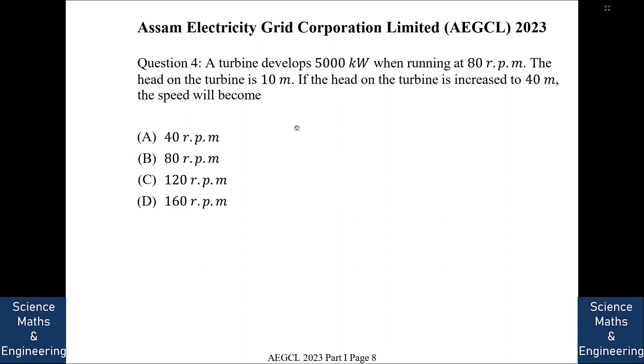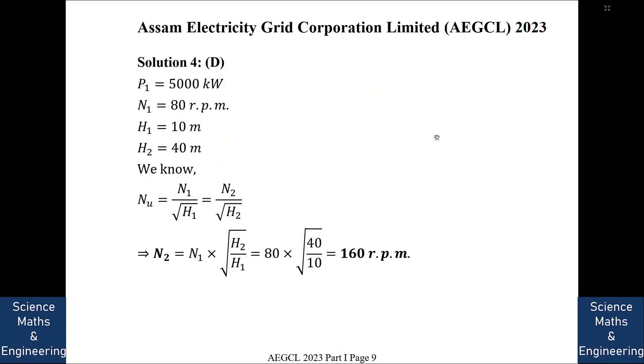A turbine develops 5000 kilowatt when running at 80 RPM, the head of the turbine is 10 meter. If the head of the turbine is increased to 40 meter, the speed will become, so this is the problem of turbine. The answer is, you see,